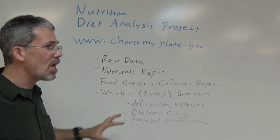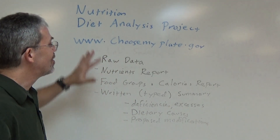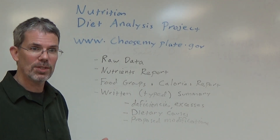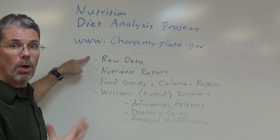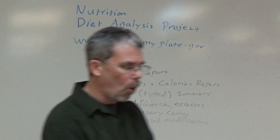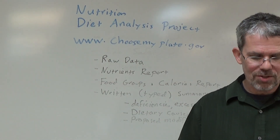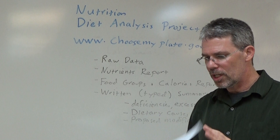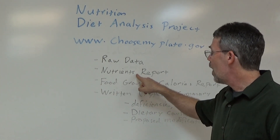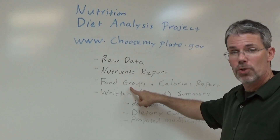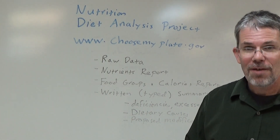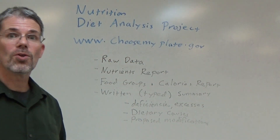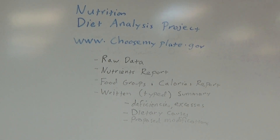Your grade is not going to be based on how well you ate, but on whether you completed the assignment and turned in everything required. The things to turn in include the raw data — simply what you wrote down, either in that format or printed from ChooseMyPlate under meals — the nutrients report, the food groups and calories report, and your typed summary. This completed example has all of that and the person made a 100. If you have further questions you can find me in my office or send me an email. Good luck!